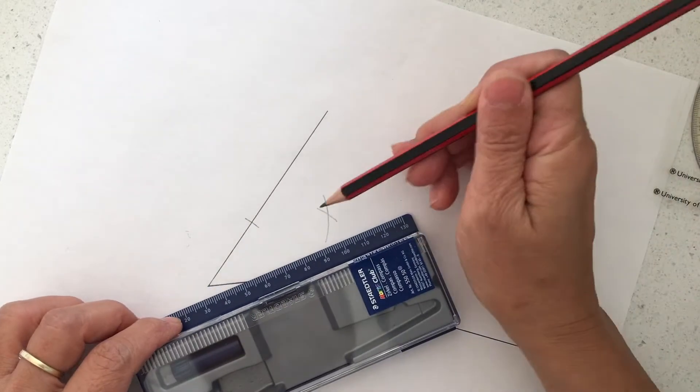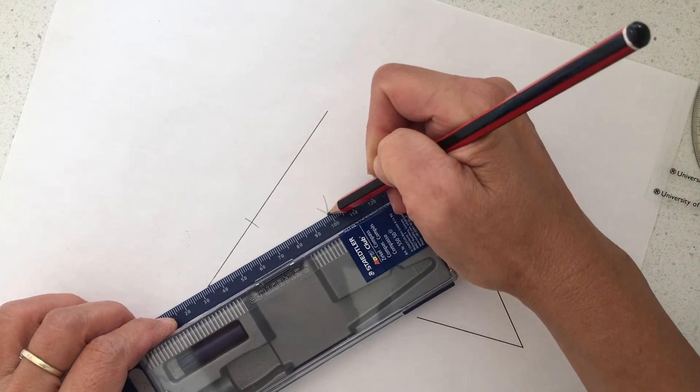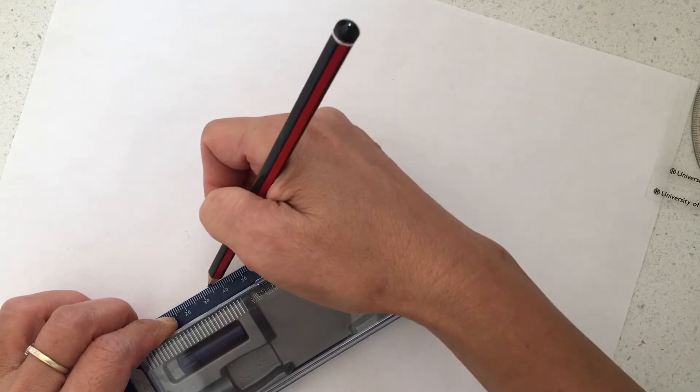If you then join the dot here and point here, you can draw a straight line.